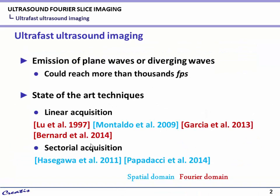The concept of ultrafast ultrasound imaging is based on the emission of plane or diverging waves. This technique allows reaching a very high frame rate. The state-of-the-art techniques can be classified into two groups: linear acquisition, which means using plane waves in emission and reconstructing a linear image, with methods proposed by Lu, Mondado, Garcia, and Bernard — and the last one is the ultrafast ultrasound Fourier slice imaging method that we proposed last year.